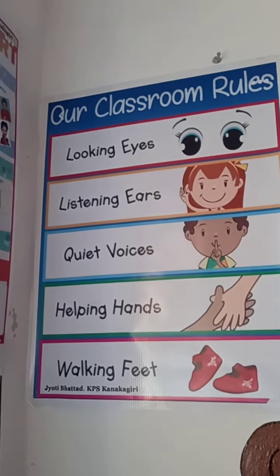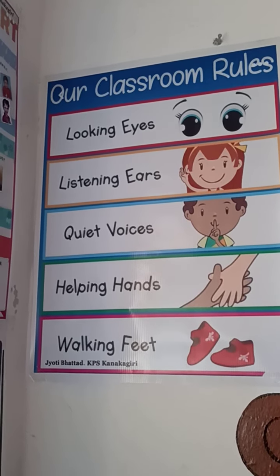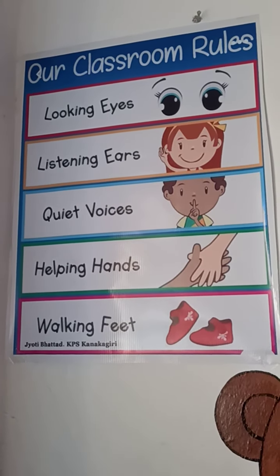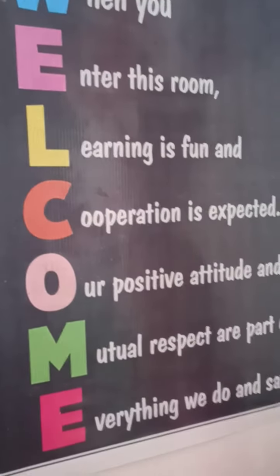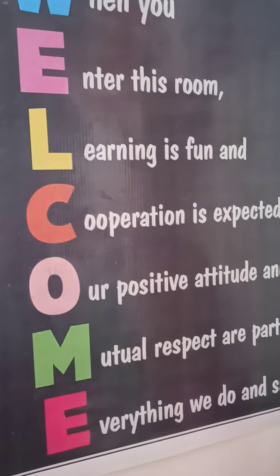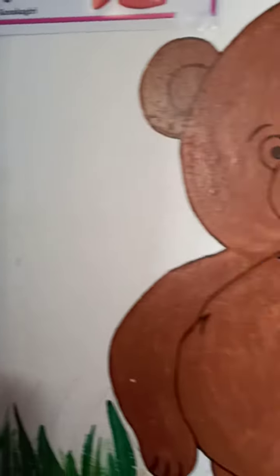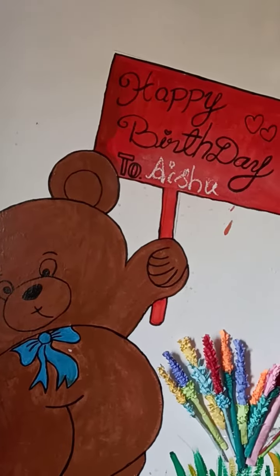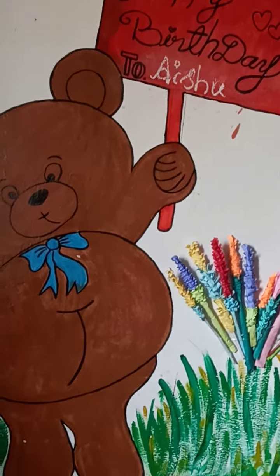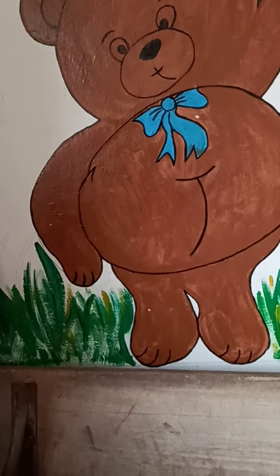And this is my classroom rules — these are the rules for everyone to follow. And this is the bird calendar for those who are going to celebrate their birthday, organized month-wise. And this is the welcome board. And this is the birthday corner where people will celebrate their birthday here in the class.